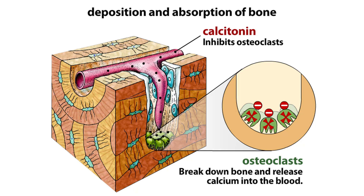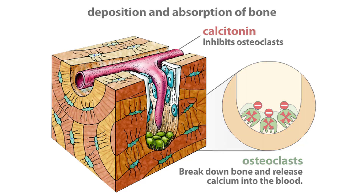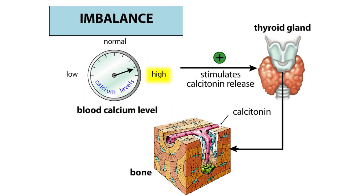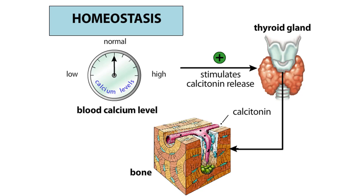Calcitonin's ability to regulate bone formation and resorption makes it an important regulator of calcium levels in many animals. However, calcitonin does not play a major role in calcium homeostasis in adult humans. If the thyroid gland is removed from an adult, the body is still able to regulate calcium levels in the blood.